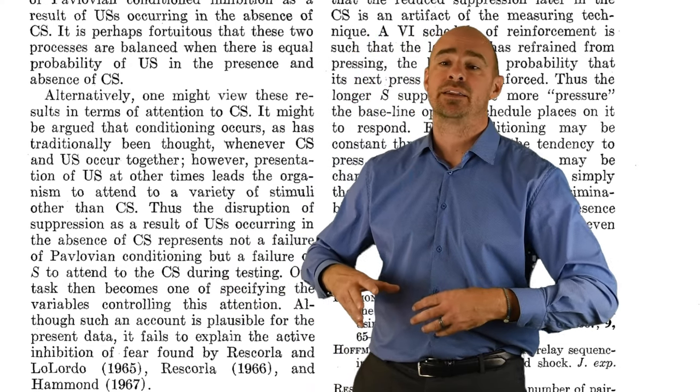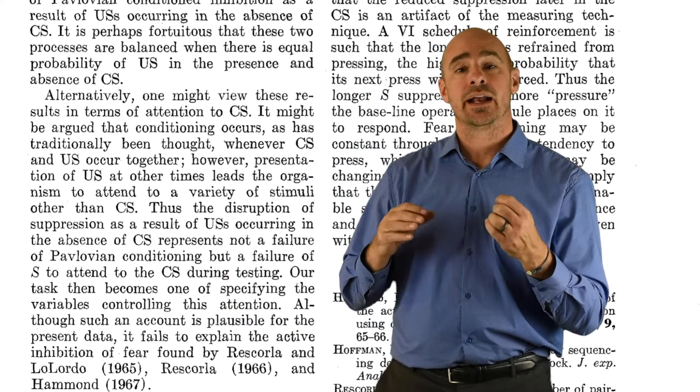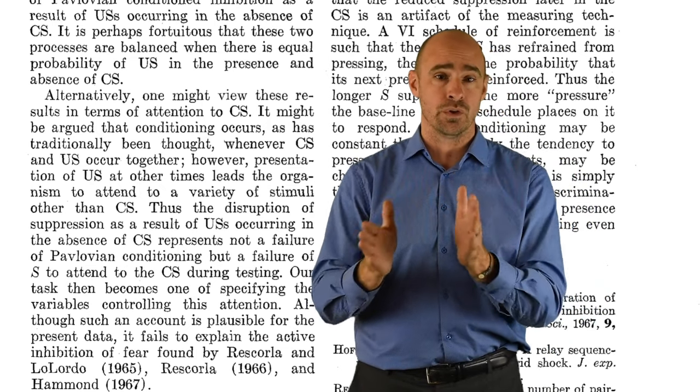And again, the way that happens is by the US coming on in the presence of the CS. So again, contingency is absolutely the key. Contiguity does play a bit of a role, the closeness between those. And what that's really about is the interstimulus interval. So as long as that ISI is short between the CS coming on and the US, then you'll get some pretty strong conditioning.